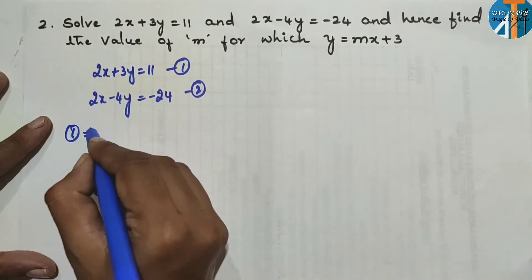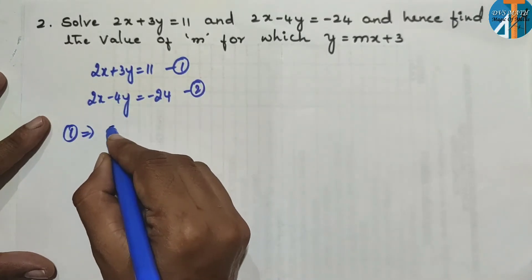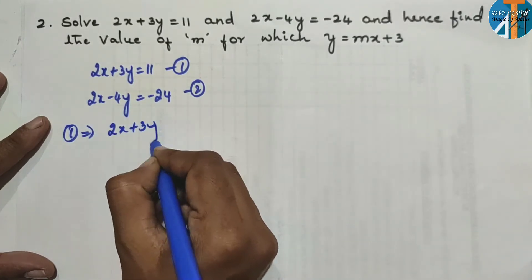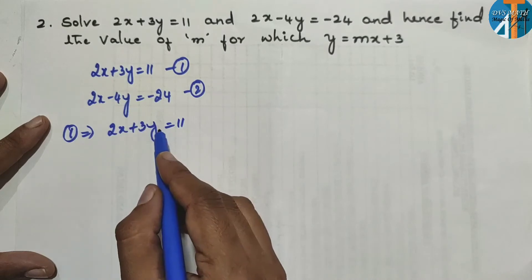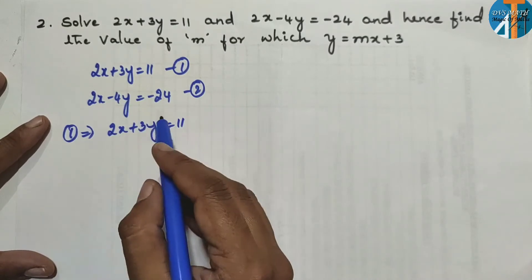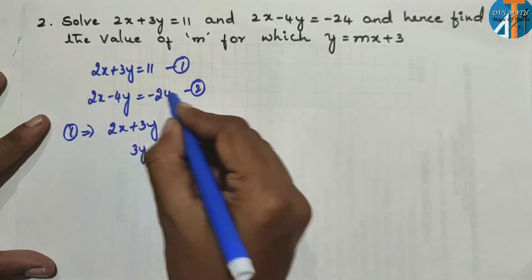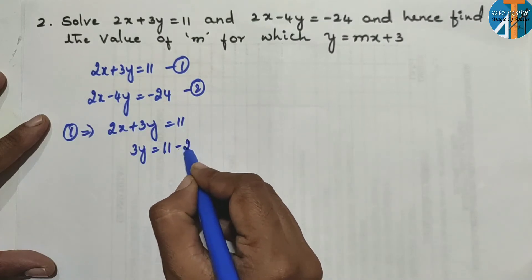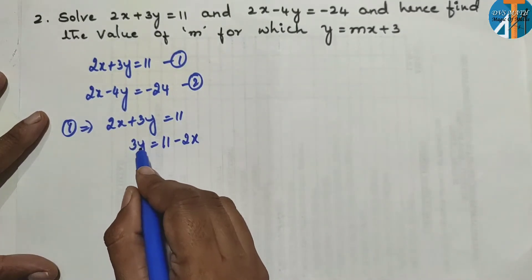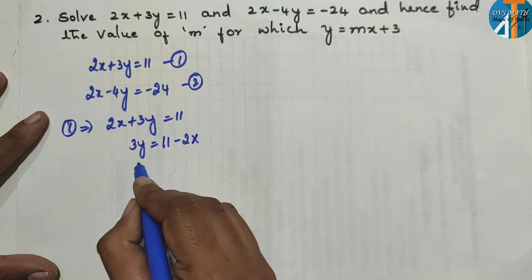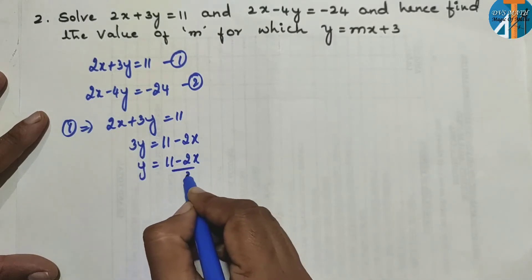Now taking equation 1: 2x + 3y = 11. Convert this equation in terms of y. So 3y = 11 − 2x, which gives us y = (11 − 2x) / 3.